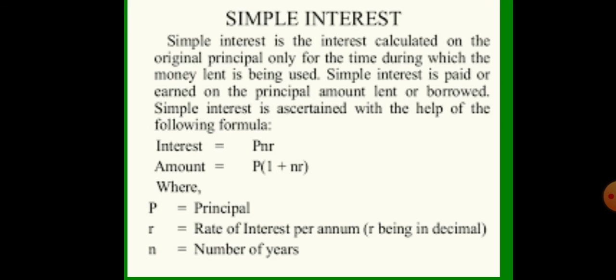Simple interest is calculated on the original principal only for the time during which the money lent is being used. Simple interest is paid or earned on the principal amount lent or borrowed. Simple interest is ascertained with the formula: Interest = PNR, and Amount = P(1 + NR).